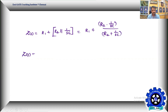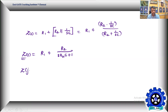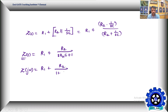Taking the LCM, the numerator becomes R2/(sC) and the denominator is sR2C + 1. Setting s = jω, we get Z(jω) = R1 plus R2 divided by (1 + jω·R2·C).